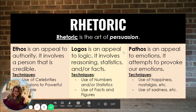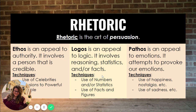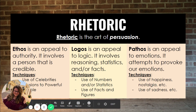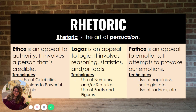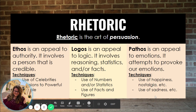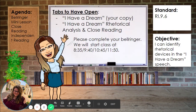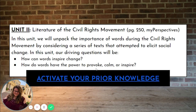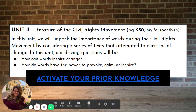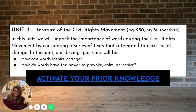Logos is an appeal to logic — it involves reasoning, statistics, and facts. The use of numbers and statistics. This one you're not going to see much of in Dr. King; he doesn't use much logos. He uses a lot of ethos and a lot of pathos. Then we have pathos — that's our appeal to emotions, trying to make you feel something: happiness, nostalgia, sadness, anger. If you look back at our driving question — how do words have the power to provoke, calm, or inspire? — those are emotions. That's pathos. The question is how words can unlock those emotions, and that's what we'll unpack in this unit.